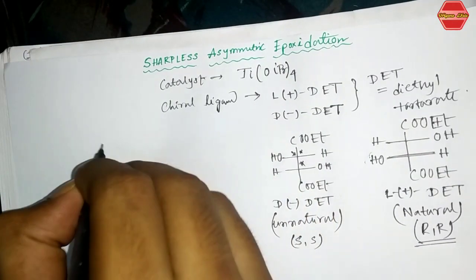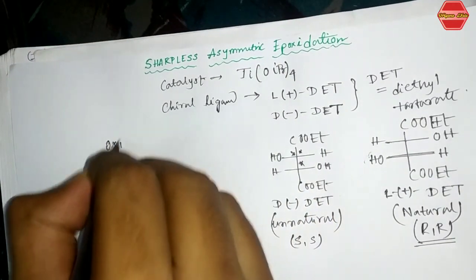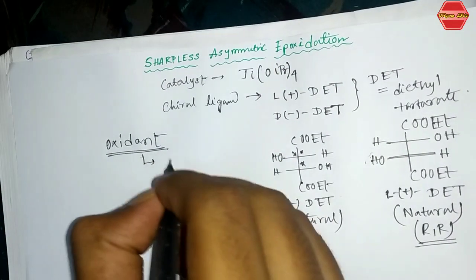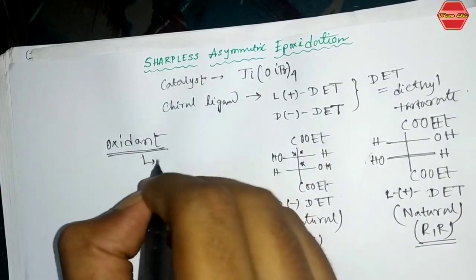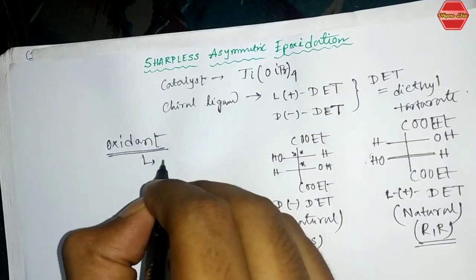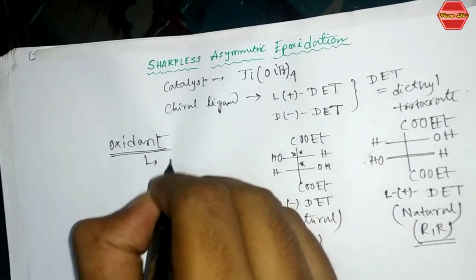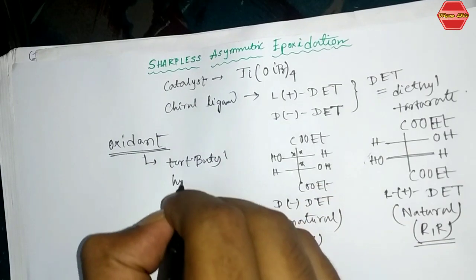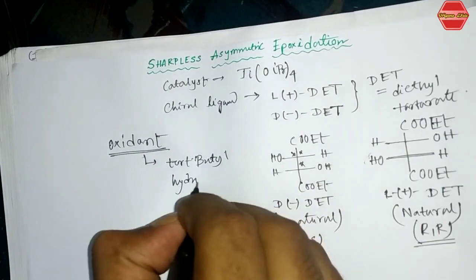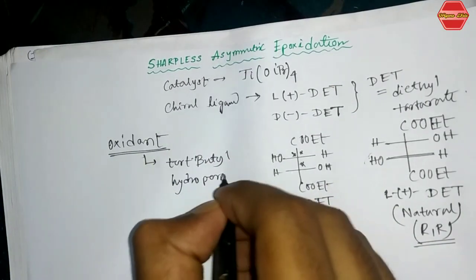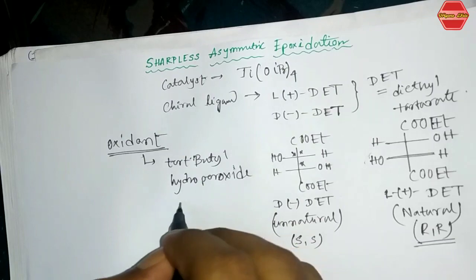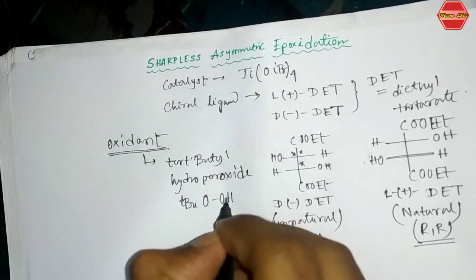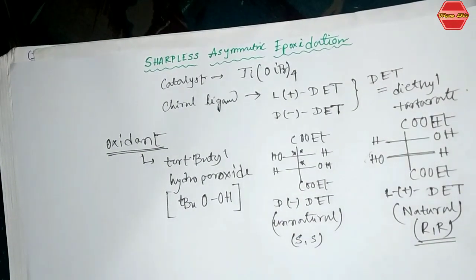One more important component is the oxidant. The oxidant used for this reaction is tert-butyl hydroperoxide, also written as TBuOOH or TBHP. This is your oxidizing agent.